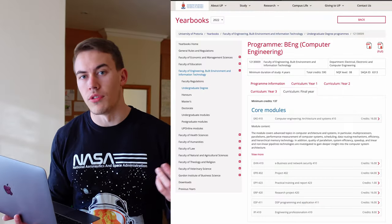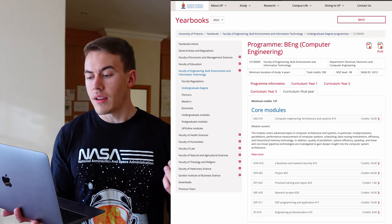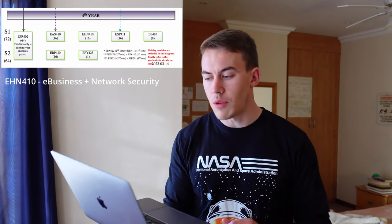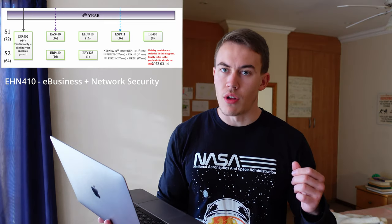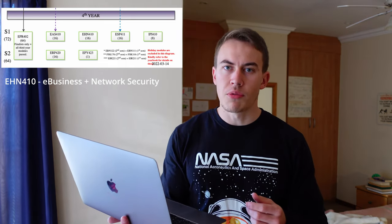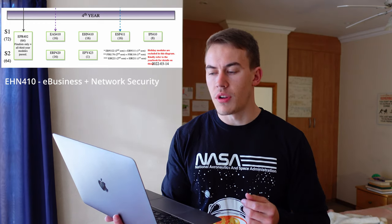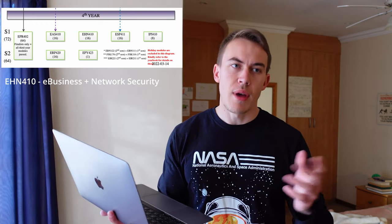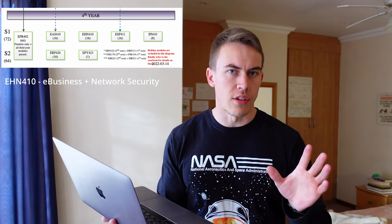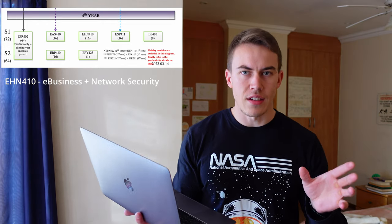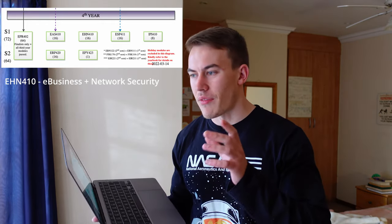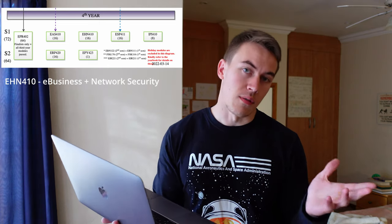The easiest way to go through the syllabus yourself is to find the TUPs yearbook and scroll through the descriptions of each subject. In final year of computer engineering at TUPs, we take a whole lot of modules including EHN, which is e-business and network security. This module goes in depth about cryptographic algorithms, secure communication and user authentication.